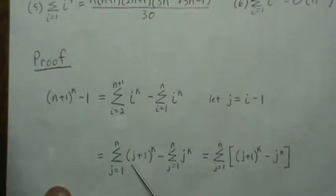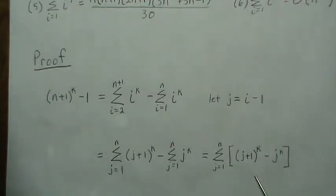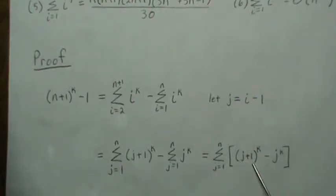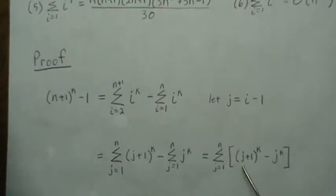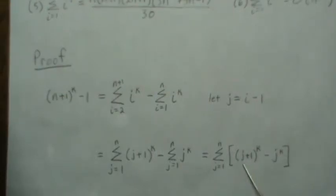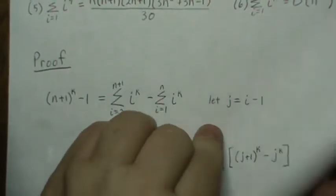Since the sigma operator is linear, we can factor it out and have this piece minus this piece. This tells us that the right-hand side is a degree k minus one polynomial in j. When we expand the binomial, we get j to the k, which cancels, and then the next leading term is j raised to k minus one. We then isolate that term in a stepwise fashion to solve for each summation formula incrementally.